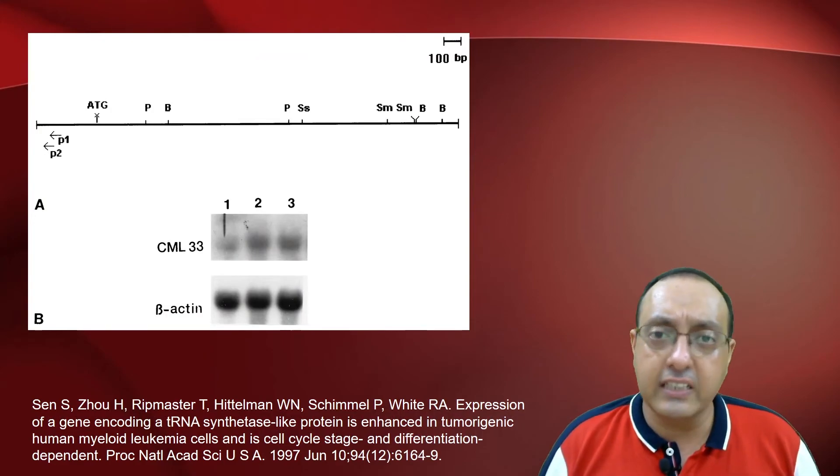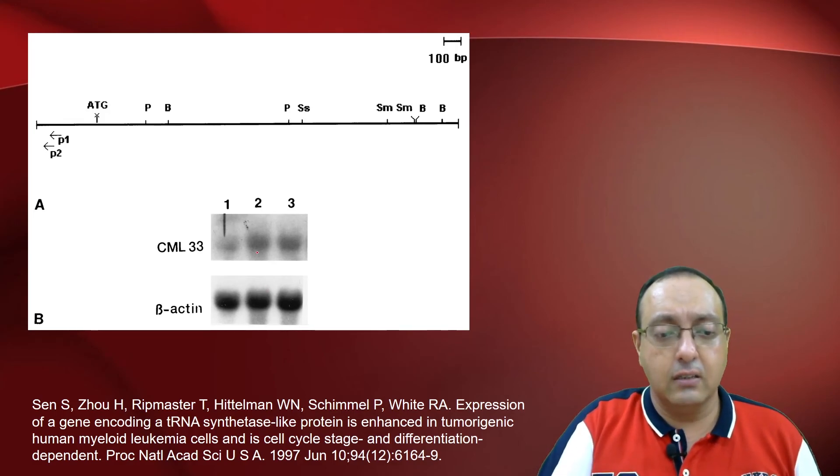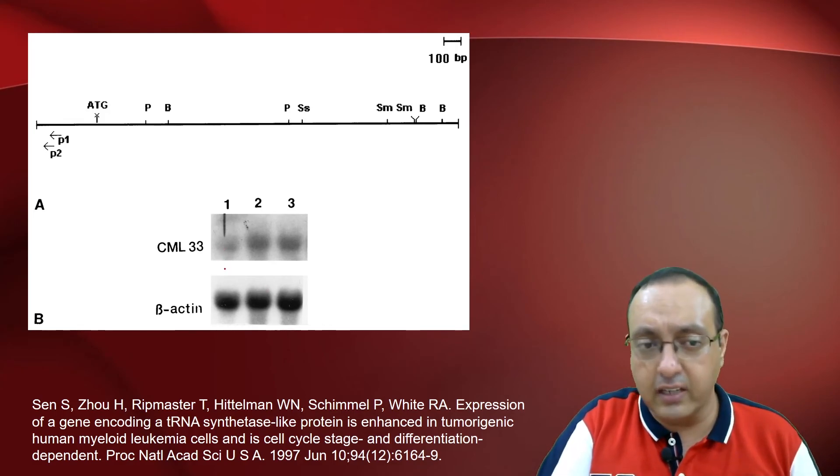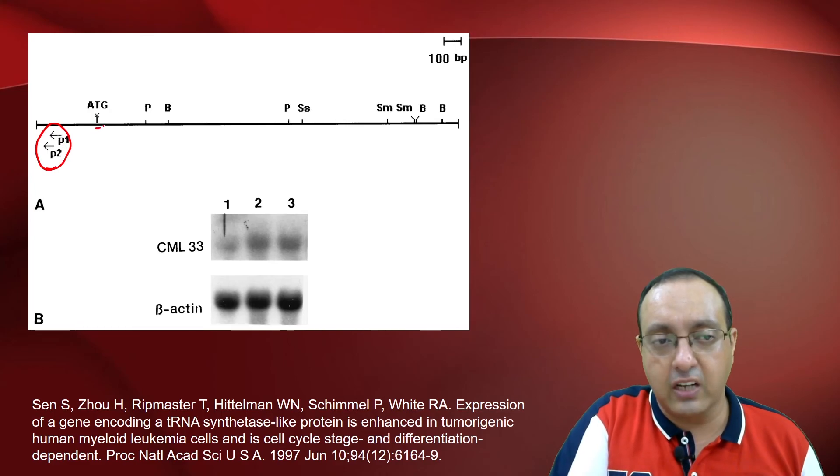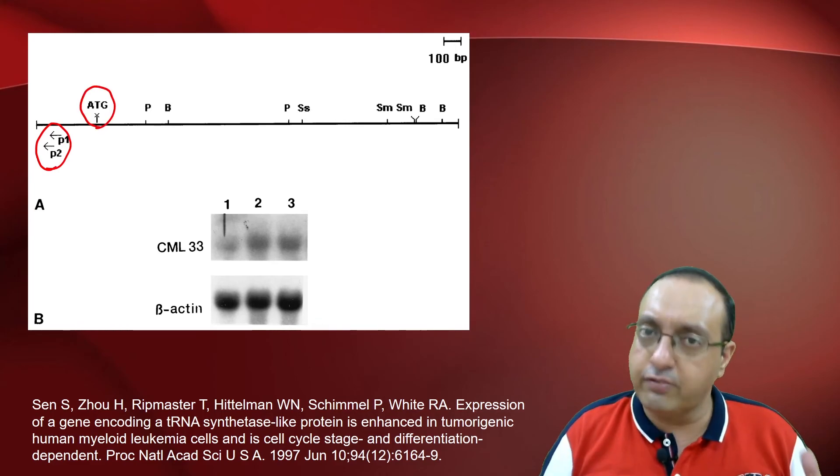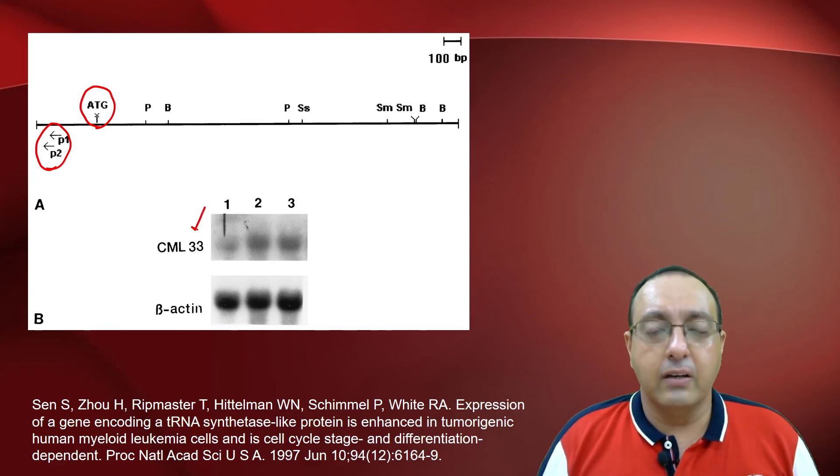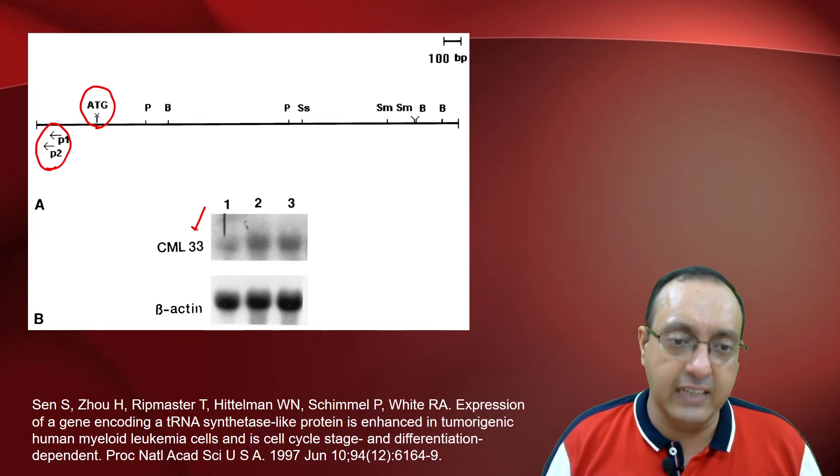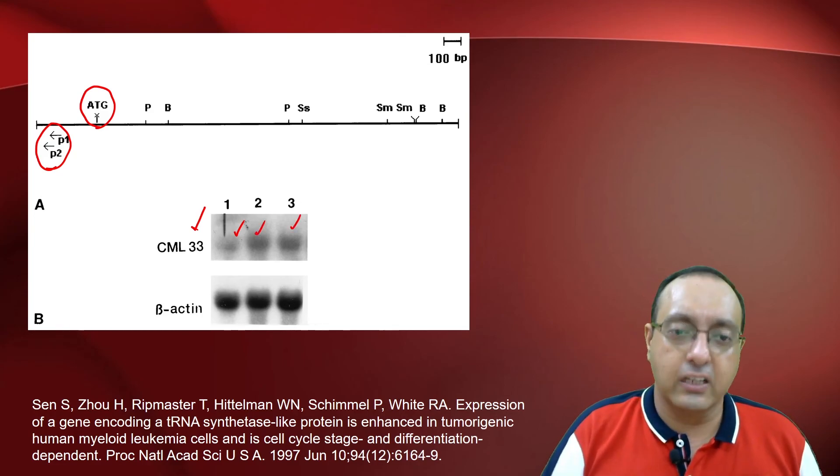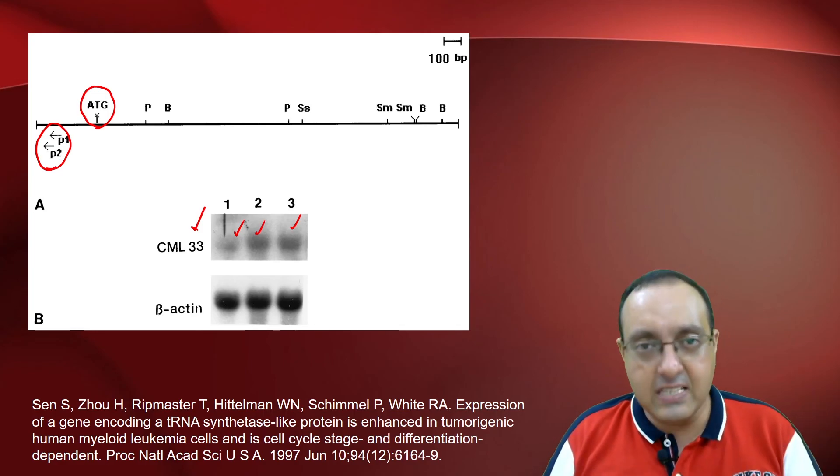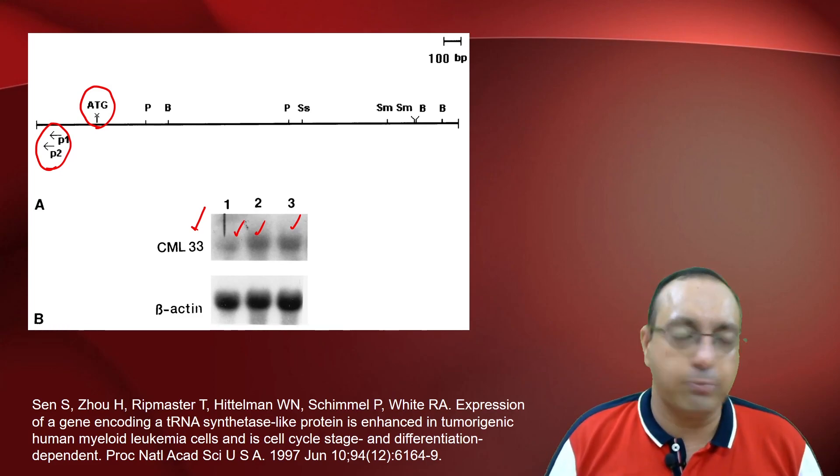Here is an example of a previous study that was published and here they are interested in mapping the 5' end of the RNA. So this is a tRNA synthetase-like protein that they are interested in mapping the TSS of. They have synthesized these two primers which are upstream of the ATG, so pretty close to the 5' end. And using these, they have done the 5' end RACE, rapid amplification of cDNA ends, and they have mapped their products and they have seen how it is expressed. And then they can even map the size as well as the sequence using Sanger sequencing and other methods of sequencing. They can map the 5' end of the RNA pretty easily.